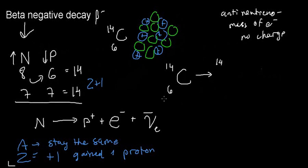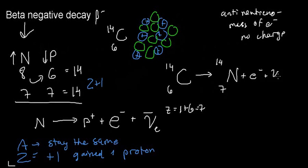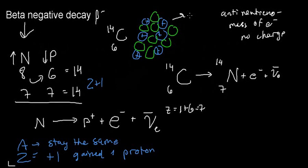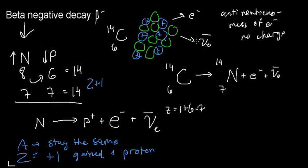We're going to gain one proton, so Z turns into seven — which means we're now dealing with nitrogen. We also have an electron and an electron anti-neutrino shooting out of the nucleus.